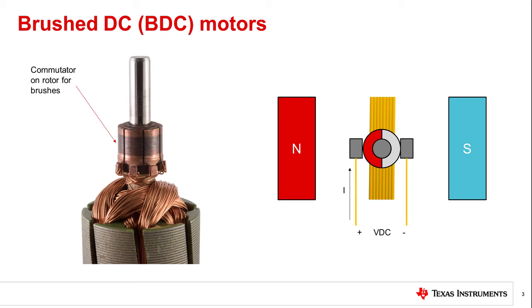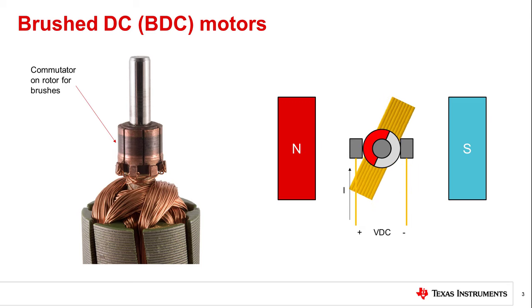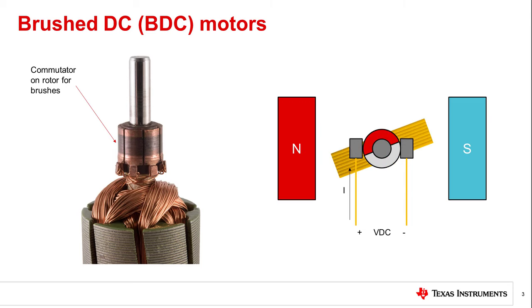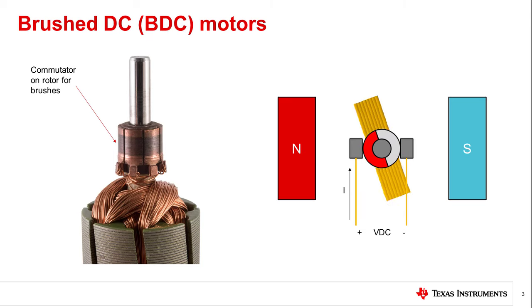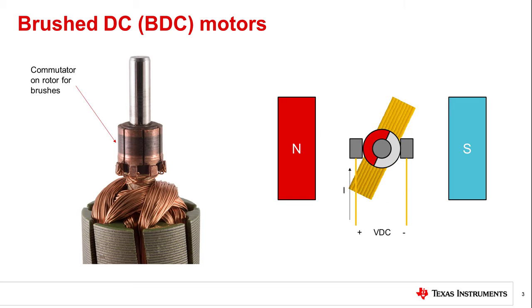Brush DC motors have a winding on the rotor. Brushes made of metal or carbon energize the winding through a commutator on the rotor. As the rotor rotates, the commutator changes the direction the current flows through the windings. When the current changes direction in the winding, the polarity of the rotor's magnetic field changes. The commutator ensures the polarity of the magnetic field on the rotor always opposes the magnetic field created by the magnets or windings on the stator, creating continuous motion in the brushed DC motor.